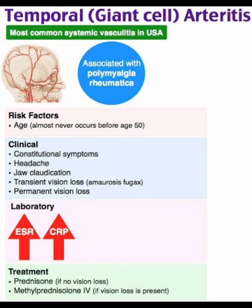In summary, temporal giant cell arteritis is a systemic vasculitis associated with polymyalgia rheumatica, most commonly occurring in patients over age 50 years. Presentation includes constitutional symptoms, headache, jaw claudication, transient vision loss, and permanent vision loss.